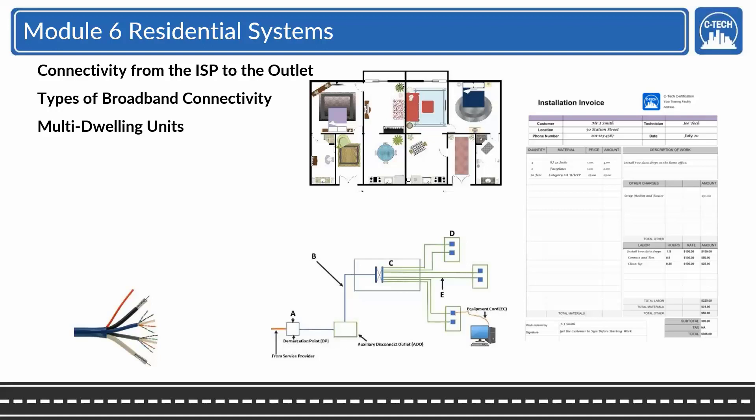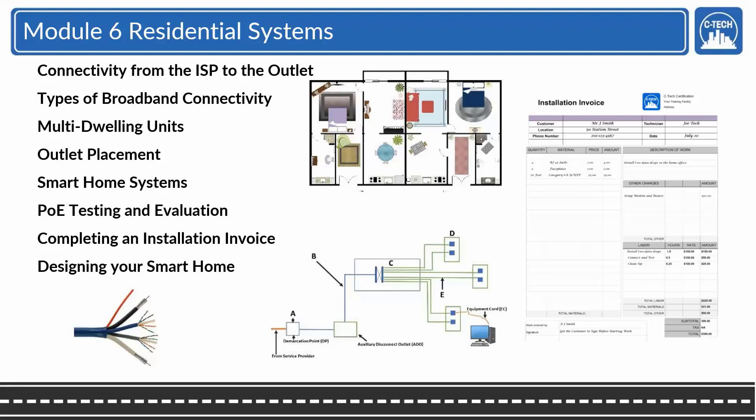We're going to do MDUs, multi-dwelling units, and the way their topology is set up. We actually have outlet placement activities where the students would measure the classroom. Outlets should be within 12 feet of any uninterrupted wall space. There's also height requirements. We're going to go through all the smart home systems and give them a smattering of those things. And of course we're going to work with PoE system, and they're going to complete an invoice as determined by a customer.